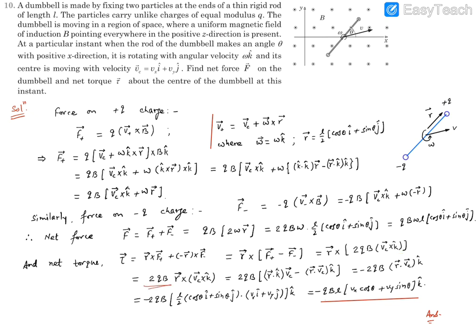So it will be like twice Q B Vc cross k cap. Further, you can take this twice Q B outside, and you can see this is, again, a vector triple product. It can be expanded, so it's twice Q B. Within the bracket, you'll find R dot k times Vc, then minus R dot Vc times k. Now again, this R dot k is going to be zero because they are perpendicular vectors. So it will be minus twice Q B R dot Vc k cap.